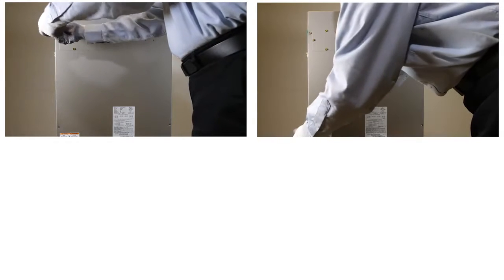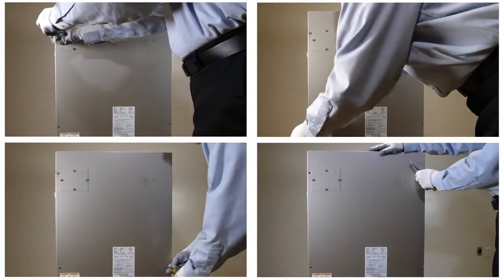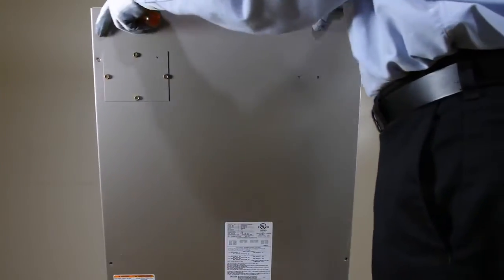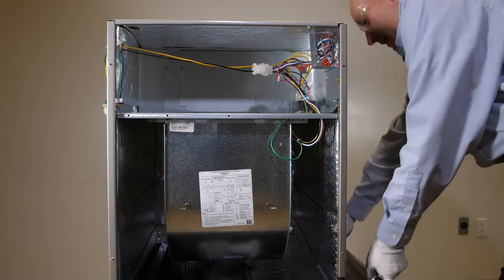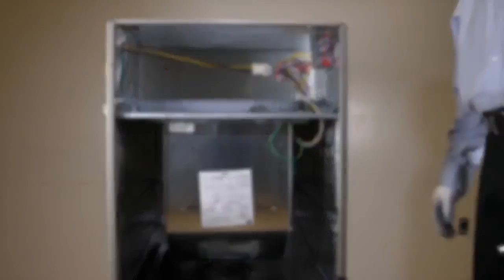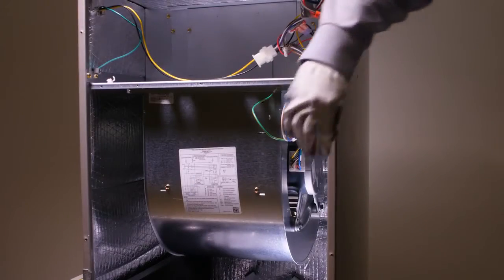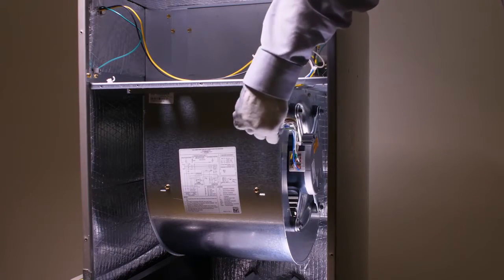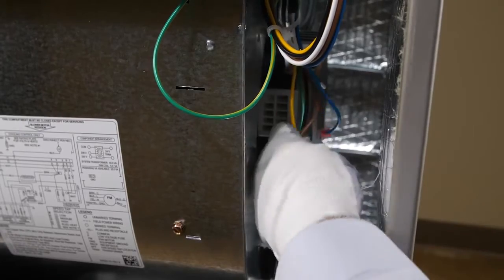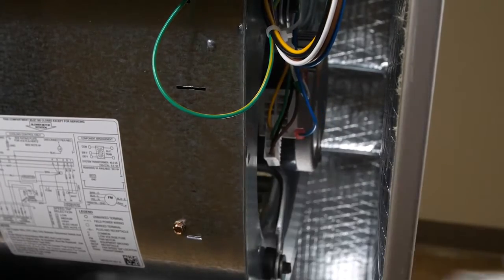First, disconnect power to the unit. Remove the four screws that attach the upper blower door. Unplug the harness which contains the power and signal connectors to the control module. Turn power back on to the unit.